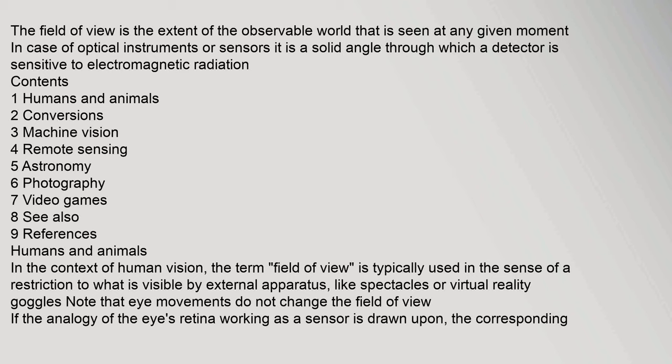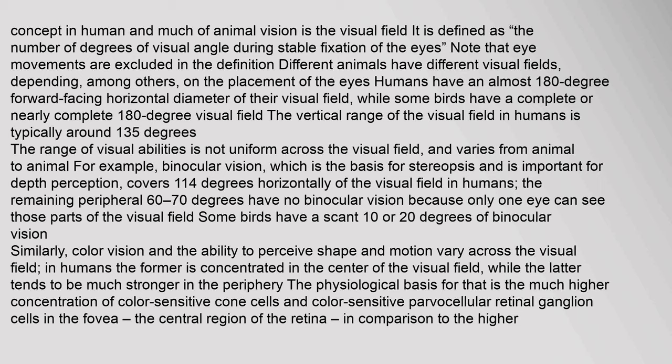Note that eye movements do not change the field of view. If the analogy of the eye's retina working as a sensor is drawn upon, the corresponding concept in human and much of animal vision is the visual field. It is defined as the number of degrees of visual angle during stable fixation of the eyes. Note that eye movements are excluded in the definition.